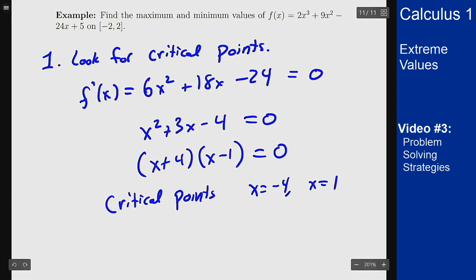Now because the interval I care about is only [-2, 2], I don't care about x = -4. Minus 4 is outside that interval so I can ignore it. The points I have to worry about now are x = 1, this critical point, and then the endpoints x = -2 and x = 2. Let's now plug in all those values into my function f.